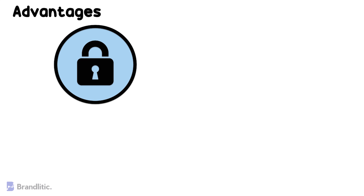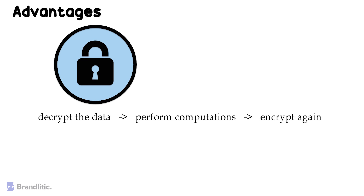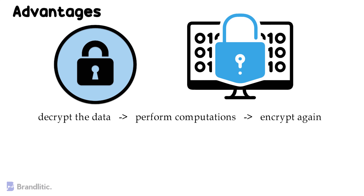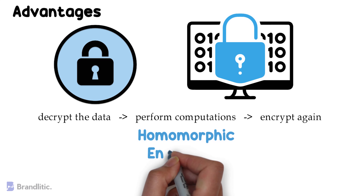Now let's look into some of the advantages of homomorphic encryption. The biggest one is that it's heavily privacy-friendly. In today's world, if we want to perform computations on encrypted data, such as mathematical operations, we have to decrypt the data first, then make our necessary computations, and finally encrypt the data again in order to send it back. But what happens when the encrypted data is very sensitive and we don't want other services to have access to it? Here is where homomorphic encryption comes into play.